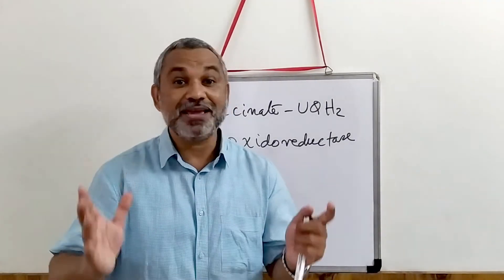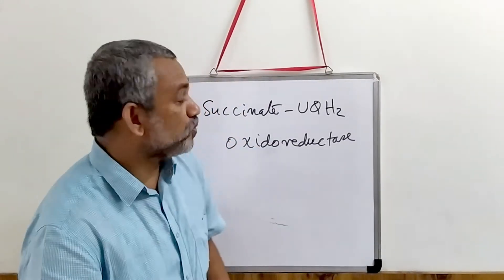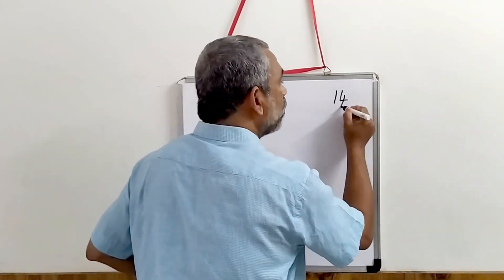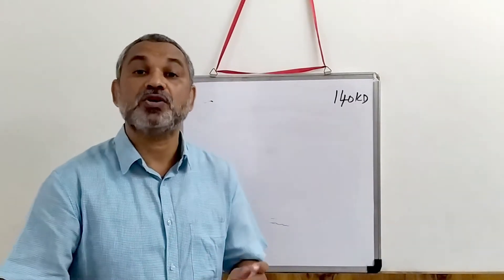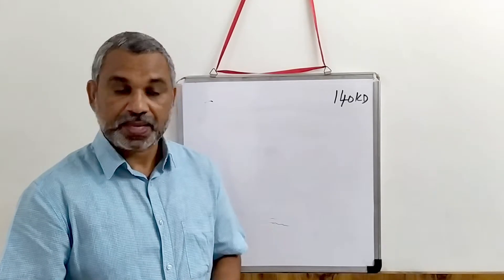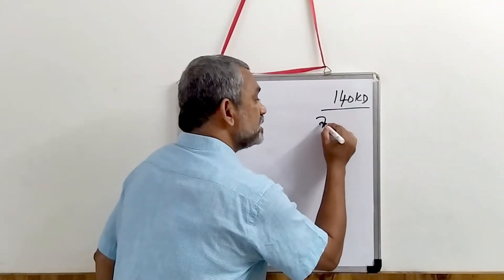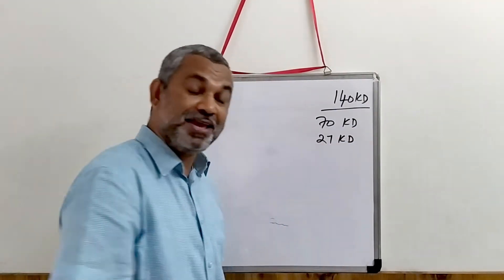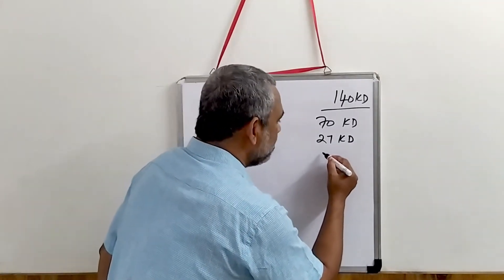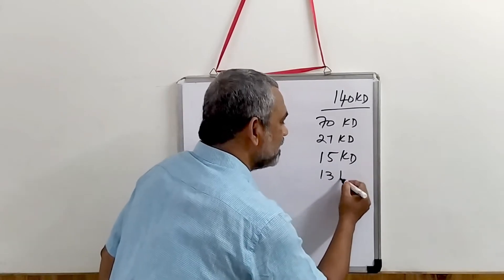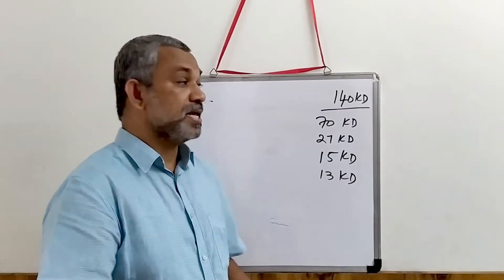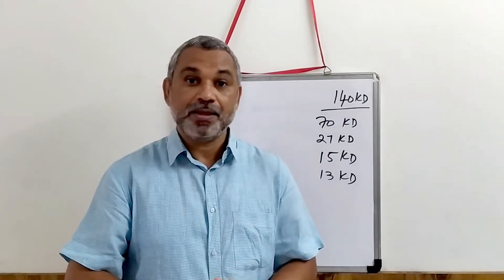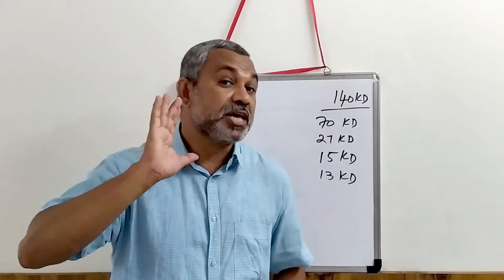This complex is a large protein with a molecular weight of about 140 kiloDaltons, and it consists of four different subunits: a large subunit of 70 kD, another relatively small subunit of 27 kD, then subunits of about 15 kD and 13 kD. These are the four subunits present in succinate UQH2 oxidoreductase.